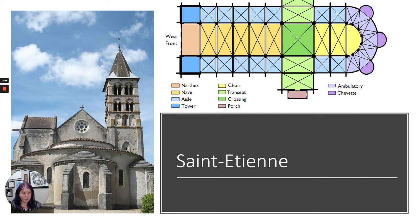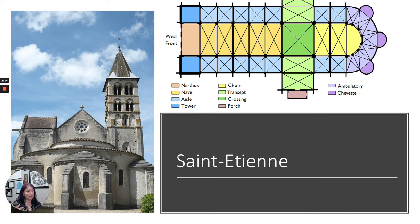We still have our narthex, which is the entryway — kind of the foyer into the church. And as we learned about in the Carolingian and Ottonian empires, we have our westwork. The westwork is where we have two towers in the front on either side of the narthex. This becomes the general layout of churches in this time period.